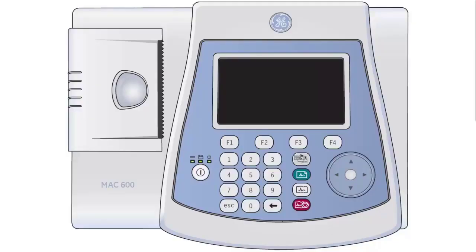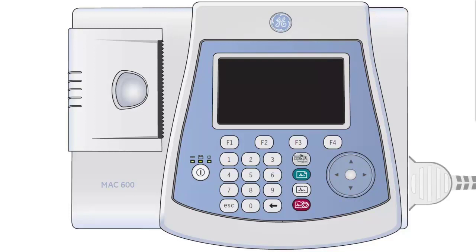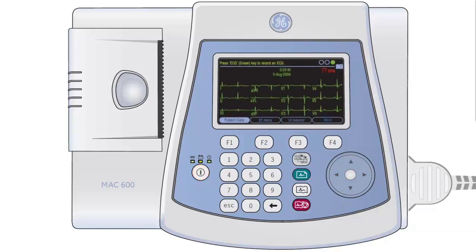Once all patient preparation and hookup is complete, connect the patient cable to the connection socket on the right hand side of the Mach 600. Switch on the Mach 600 using the power button located on the left hand side of the number pad.